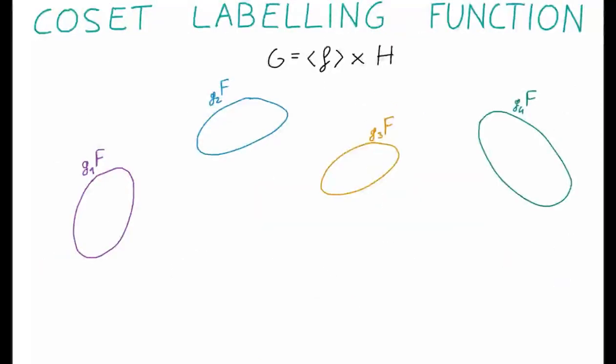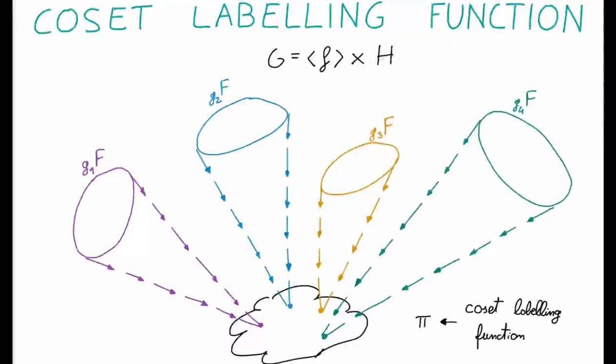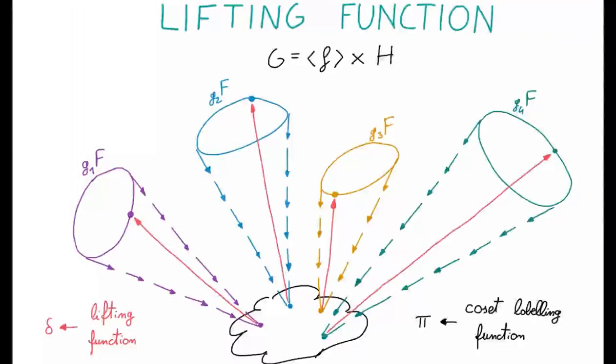The question is, how can we obtain this canonical representative of the coset in a polynomial time? In order to solve this problem, we introduce two new notions. The first one is called the coset labeling function. Basically, it is an efficient function that maps each of the cosets into a different element.